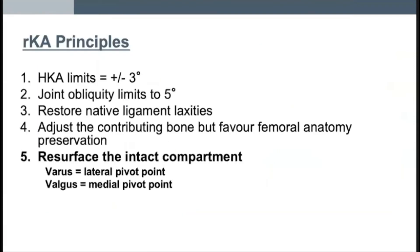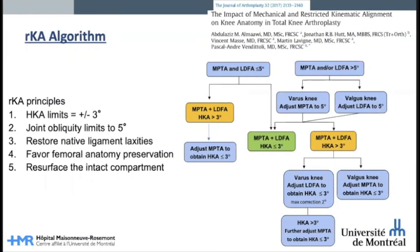Here is the fifth and last principle. As a landmark, I suggest to resurface the intact compartment and adjust the cut angle on the worn side. For varus knees, we resurface the lateral compartment and adjust the medial side. For valgus knees, we do the opposite by resurfacing the medial side and adjusting the lateral compartment. To simplify the decision making, here is the RKA alignment algorithm to follow for each patient. This algorithm helps you follow our five RKA principles and favor adjustments on the most contributing bone to the deformity while aiming for femoral anatomy preservation.